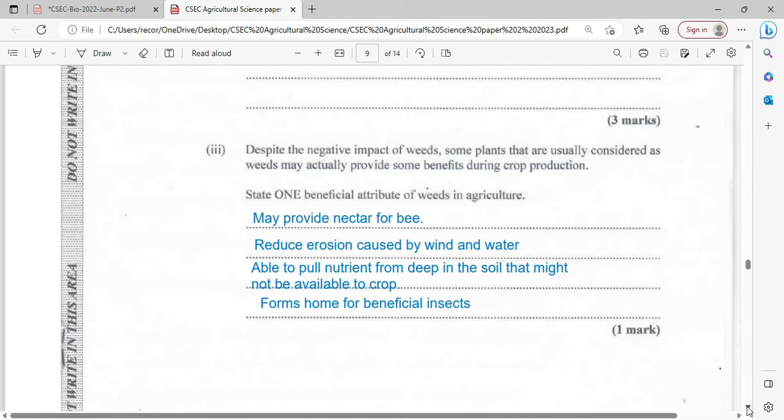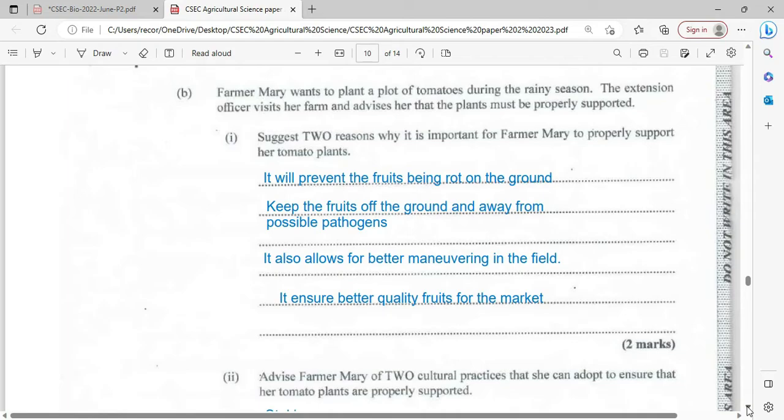So there might be some insects that are probably eating aphids. There might be some insects that are pretty much carnivorous. It provides an area for them to hide and camouflage in order to get those parasites or pests to the farmer. Farmer Mary wants to plant a plot of tomatoes during the rainy season. The extension officer visits the farm and advises her that the plant must be properly supported.